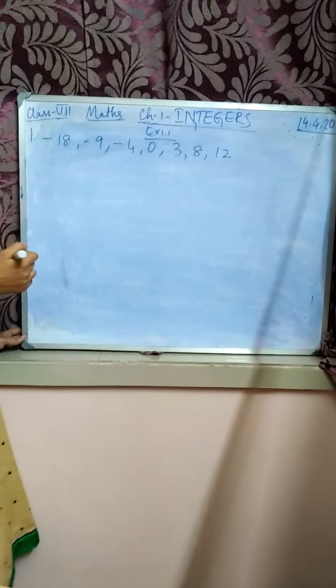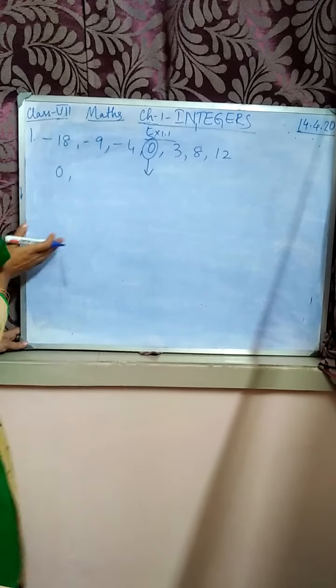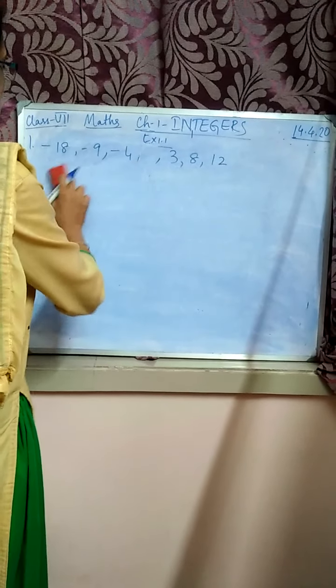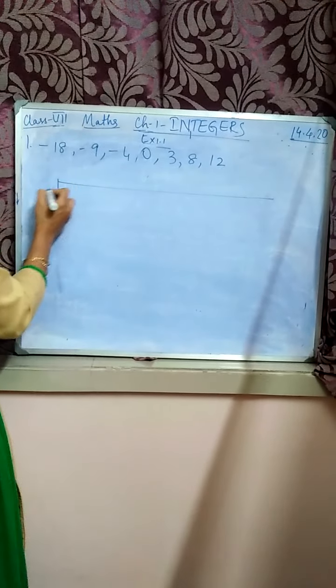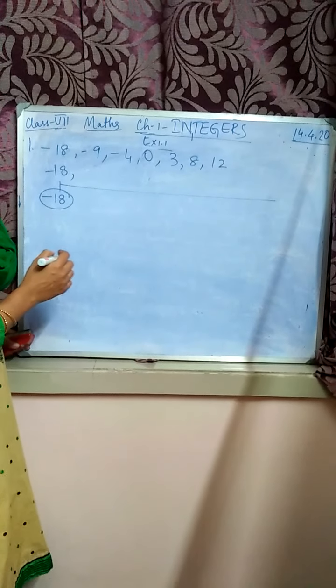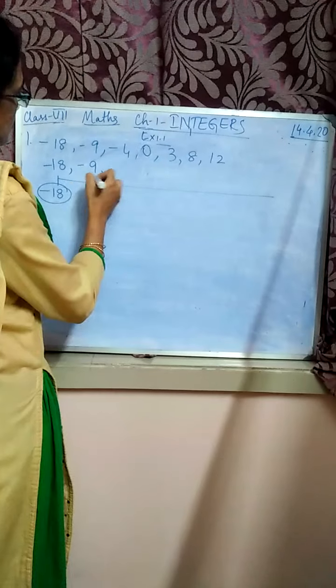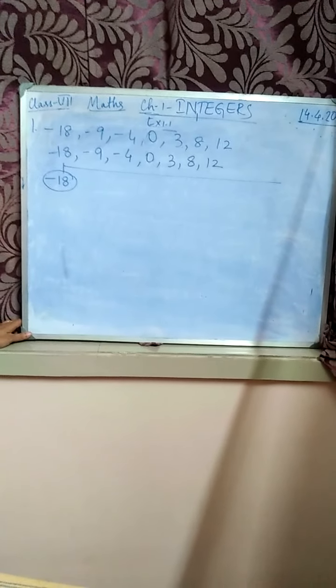How will you write the numbers in ascending order? The lowest number — since there are negative numbers, minus 18 will have the lowest value. Then minus 9, minus 4, 0, 3, 8, 12. As it is shown on the number line, you write the integers in ascending order. Similarly, you can write them in descending order — from 12 to minus 18.